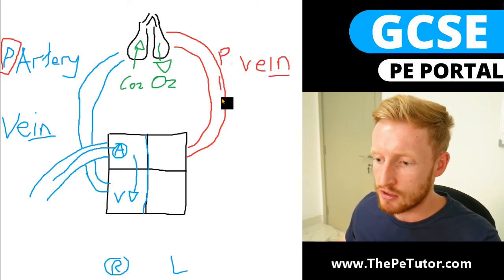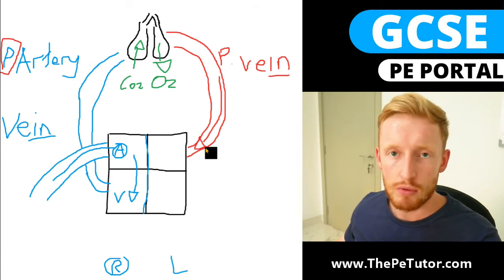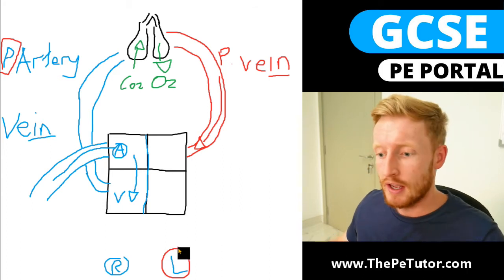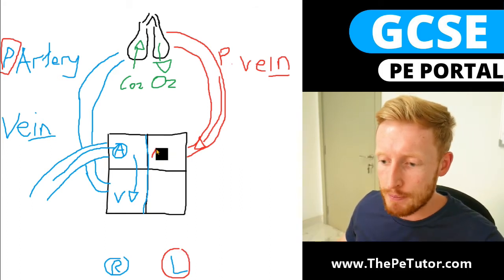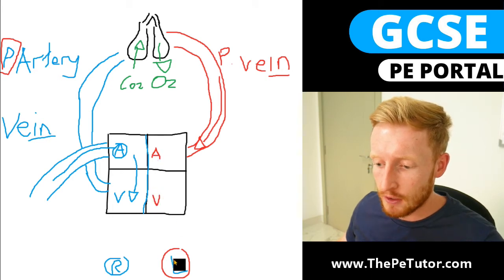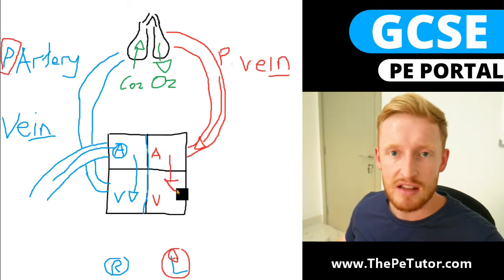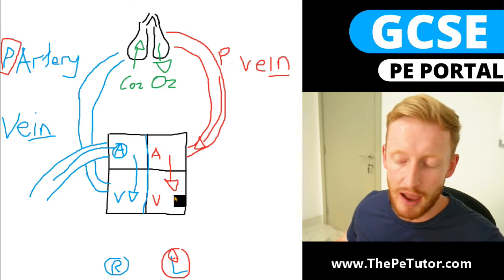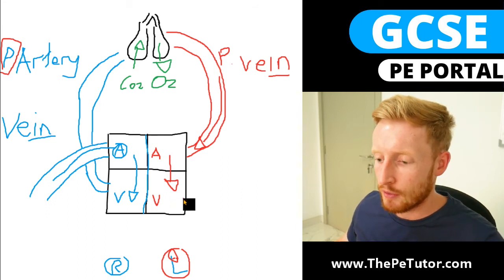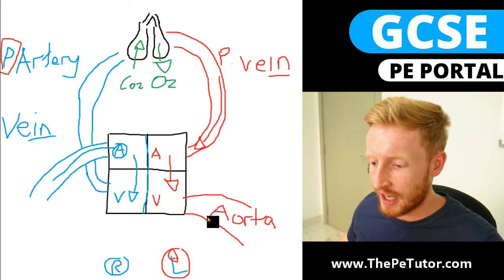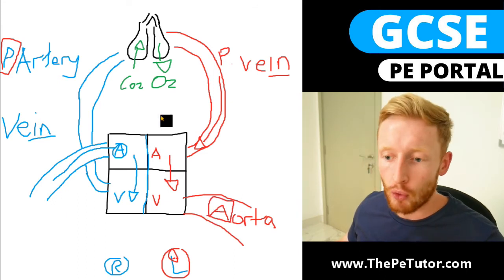The pulmonary vein comes downwards back into the left-hand side — because from the perspective of the person it's their left side — and 'A' points up so it's the left atrium. From there, there's nowhere else for it to go apart from downwards into the left ventricle. From the left ventricle, blood is then ejected to the rest of the body out of the aorta — and we can remember the aorta because it starts with 'A' and 'A' for away.